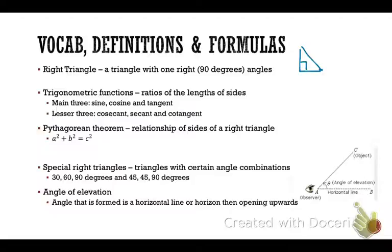The next definition is trigonometric — or you can just say trig functions or ratios. Remember that a ratio is something compared to something else using division. So for example, 2 over 3 is a ratio. Trig ratios are ratios of the lengths of sides of triangles. There are six trig ratios or functions that we use. The main three are the sine ratio, the cosine ratio, and tangent.